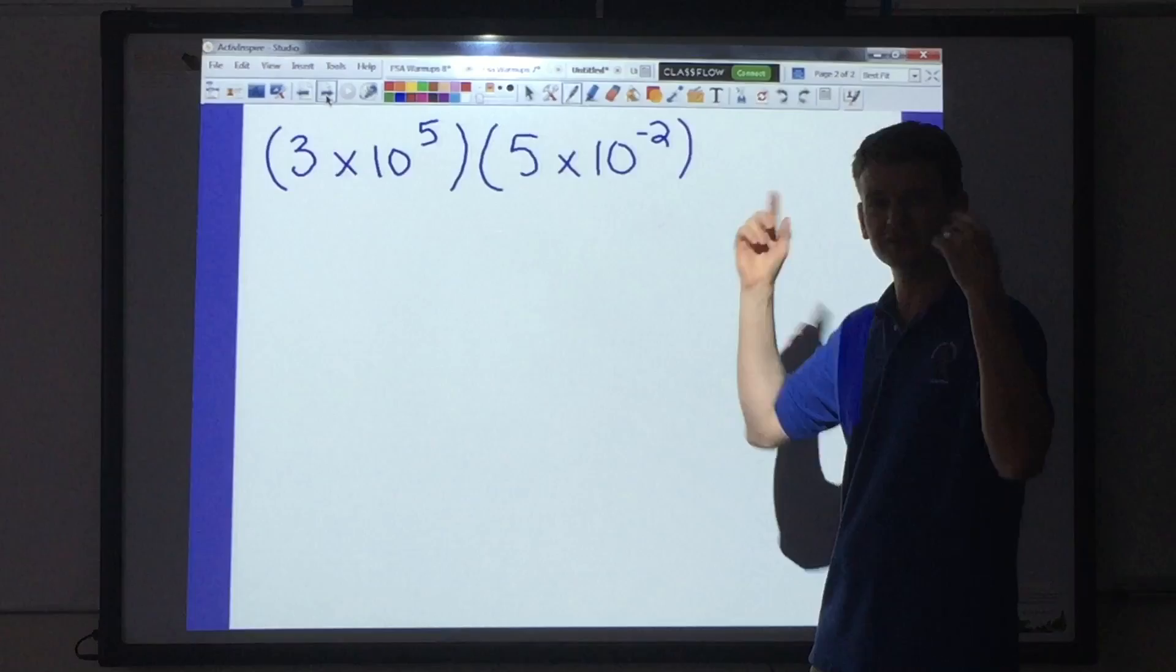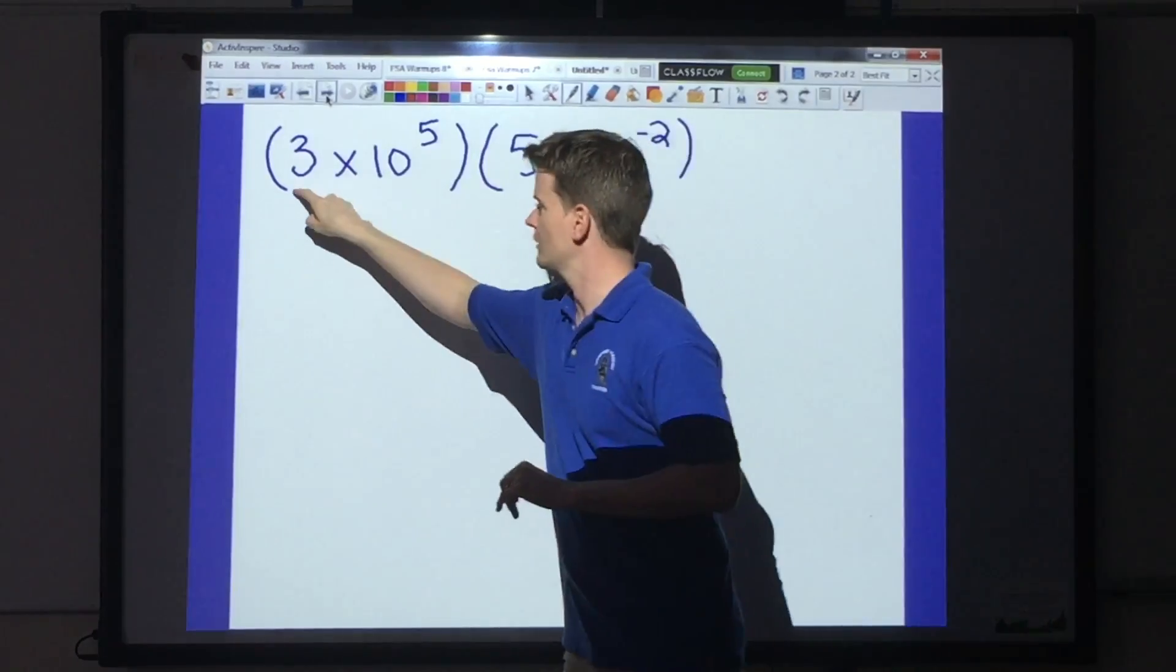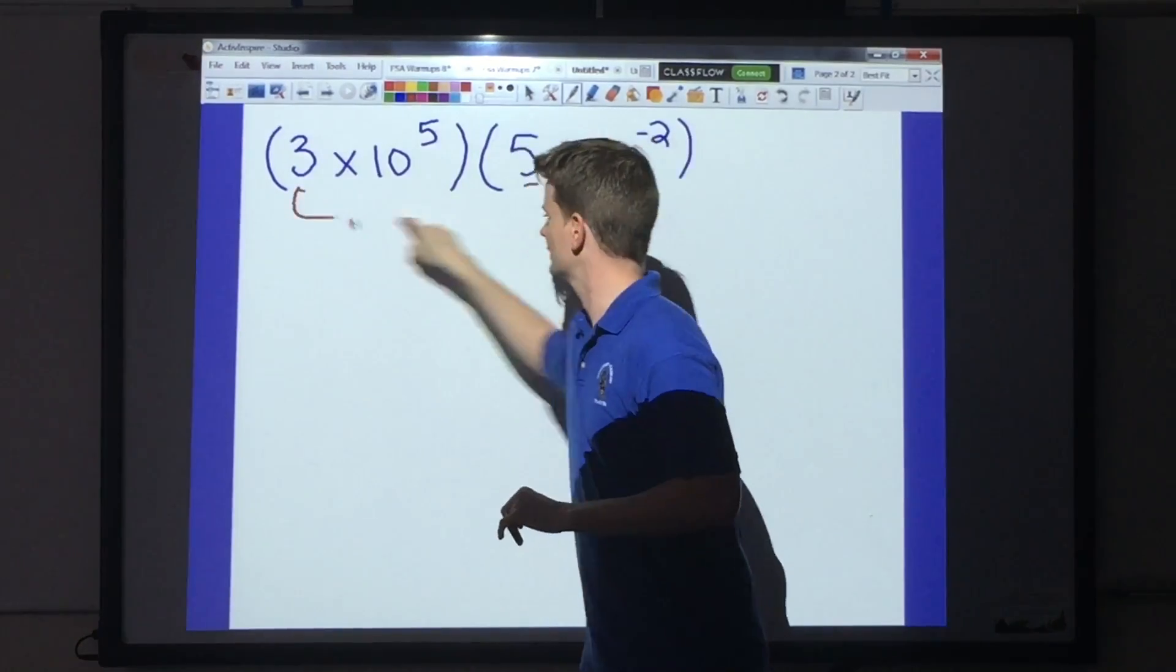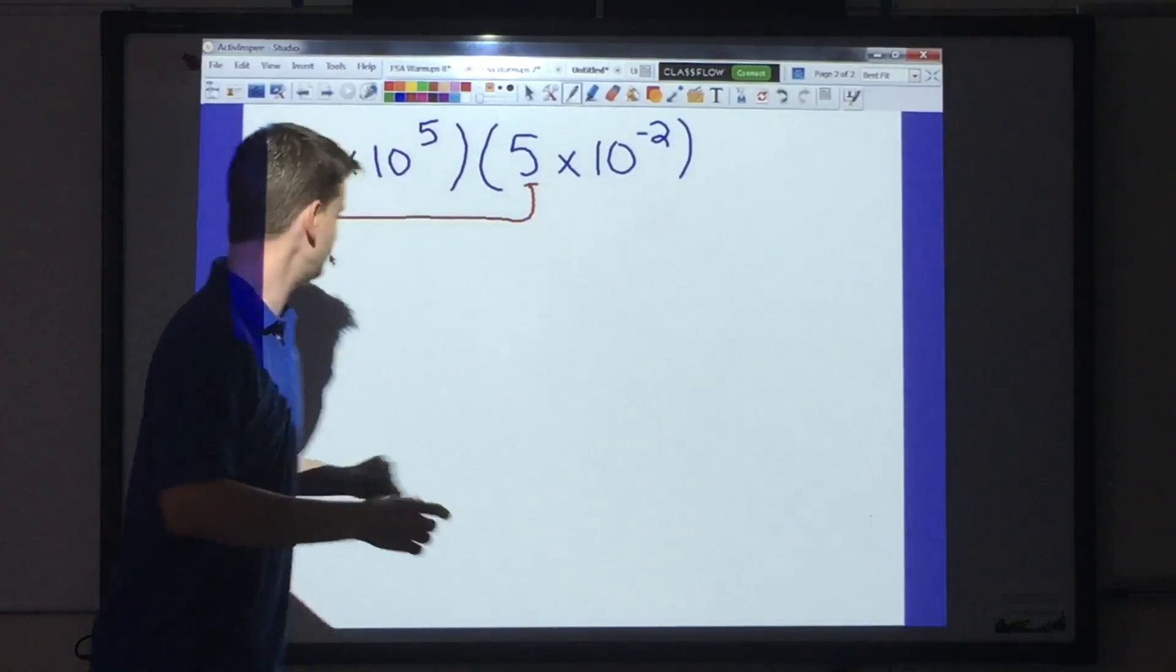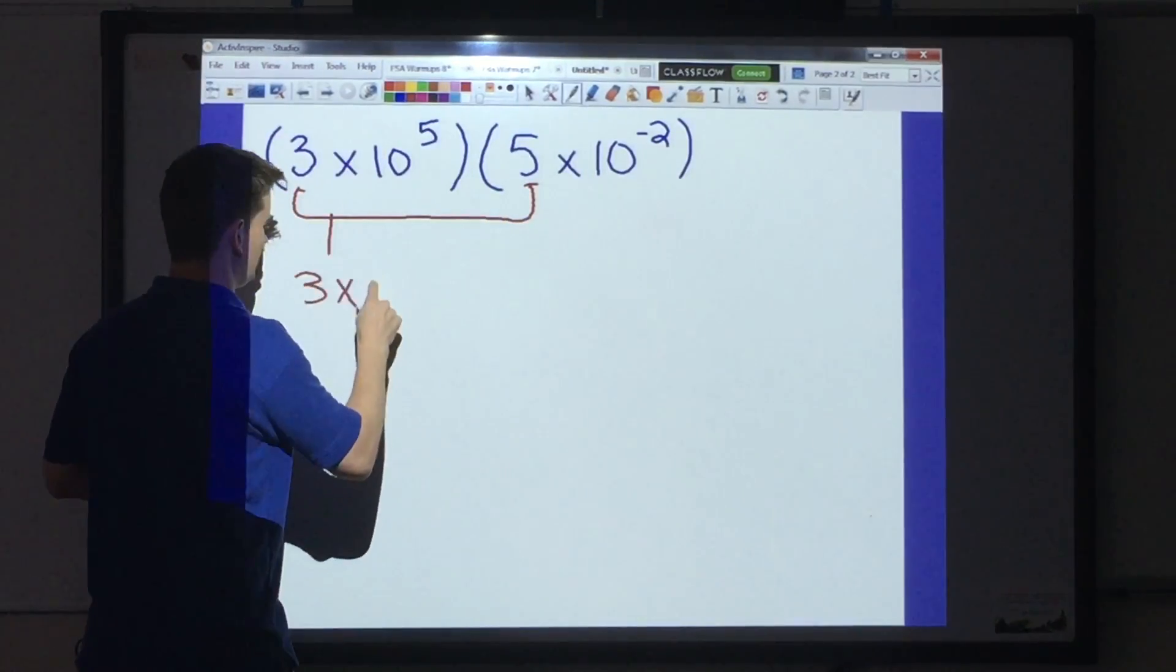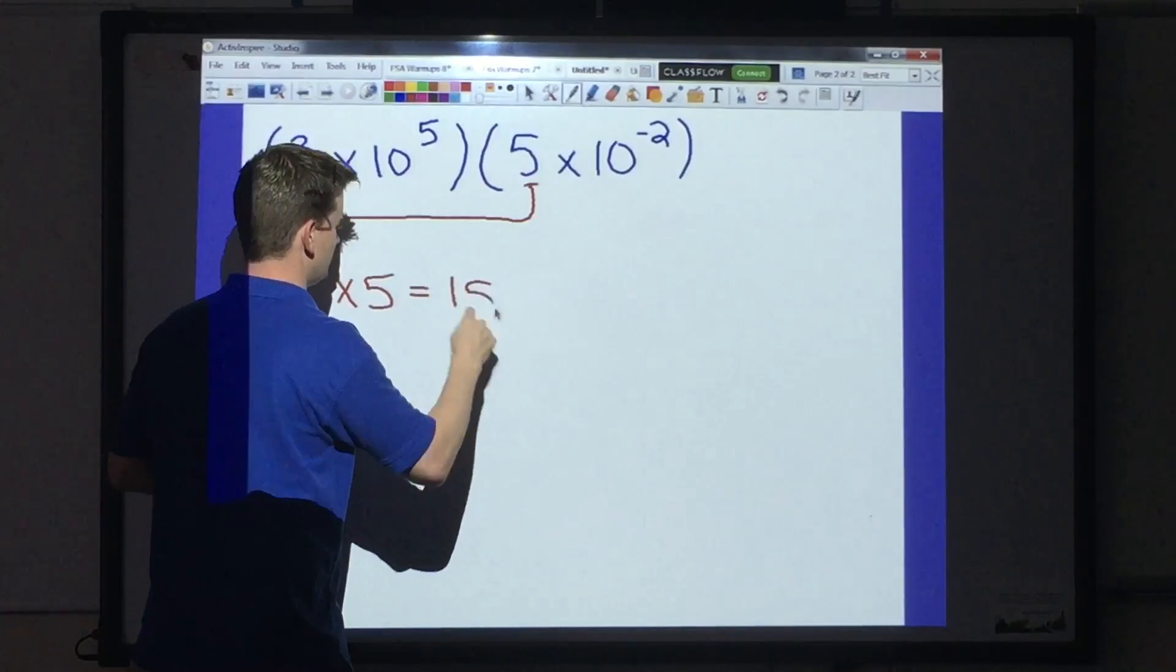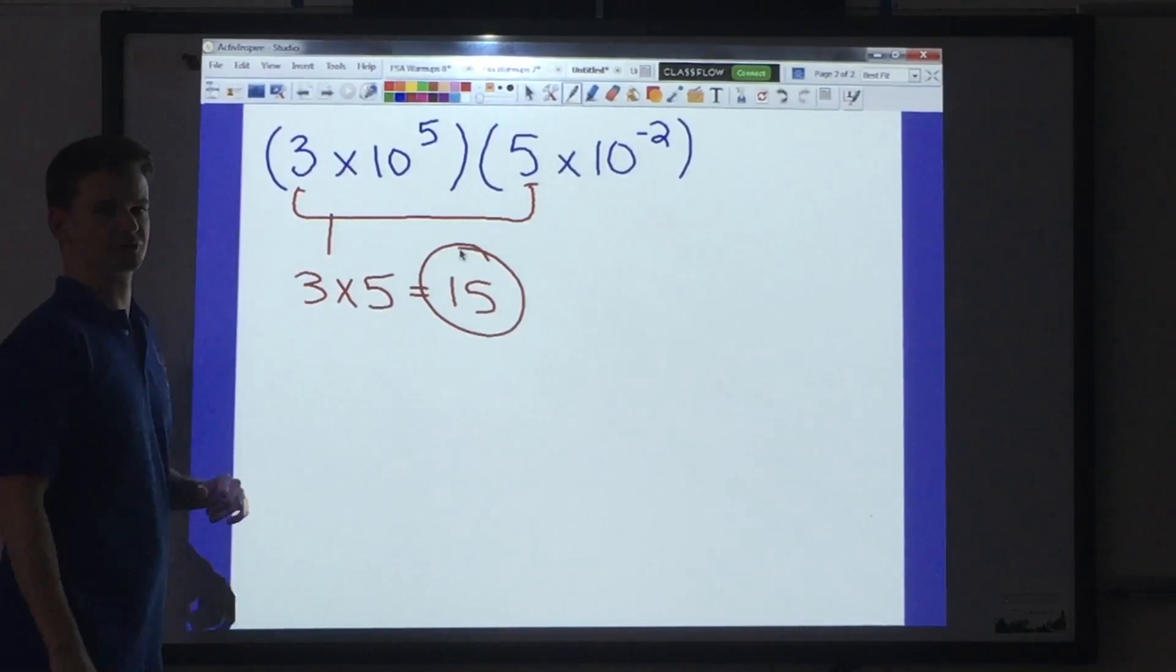So what we're going to do is the same process to start. We multiply the factors. 3 times 5 gives me 15, good. So 3 times 5, that gives me 15. I've multiplied my factor.